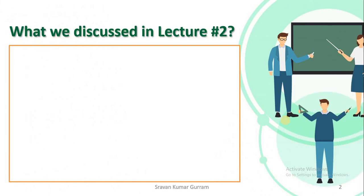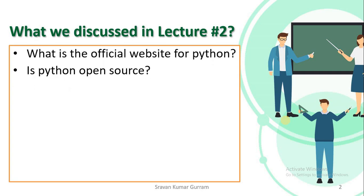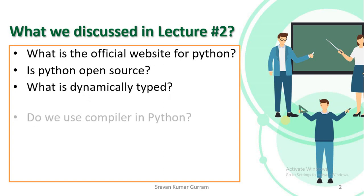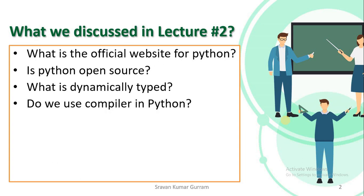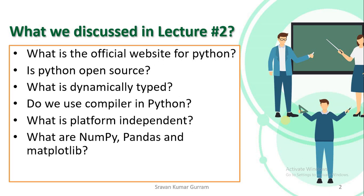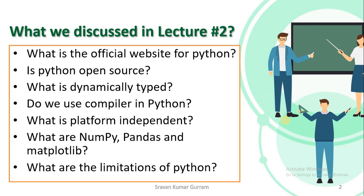Before starting this video, let us recall what we discussed in the last video, lecture two. As part of that video, we learned these topics: what is the official website for Python, is Python open source, what is a dynamically typed programming language and what is statically typed, do we use a compiler in Python or an interpreter or both, what is platform independent, what are NumPy, Pandas and Matplotlib, and what are the limitations of Python. All these were covered in lecture two. If you didn't watch it, please watch it and continue with this video.